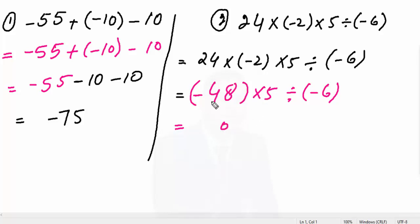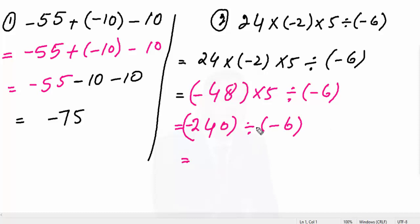5 fours are 20, plus 4 carry gives 24. So we get minus 240. Now put the division sign — we have minus 6 here. When we convert division to multiplication, the divisor becomes 1 over minus 6.